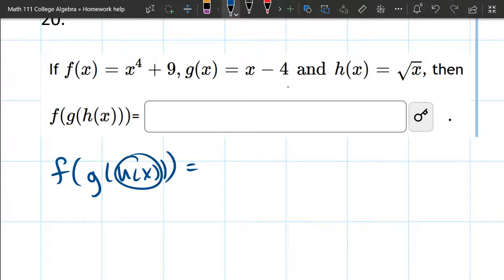All right, first up, h of x. So we got square root x up here. So it's f of g of just square root x.